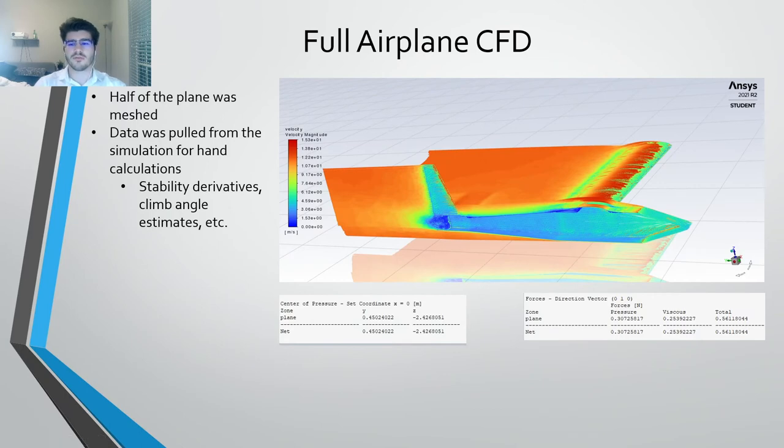A simulation of the full aircraft was also done. Since we were mainly worried with the pitching moments of the aircraft, we only meshed half of the airplane as it is symmetric about the pitching plane. Data from the CFD simulation was pulled, such as the drag forces and also the center pressure, in order to perform different calculations such as the stability derivative and climb rates.